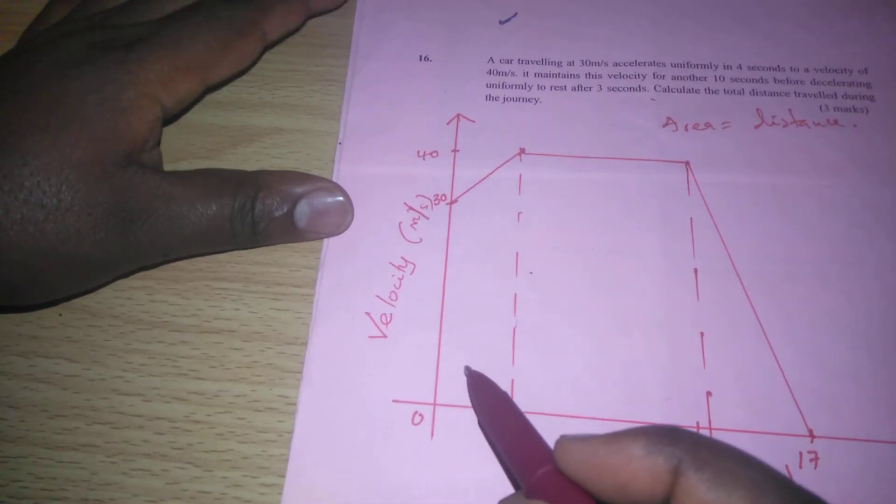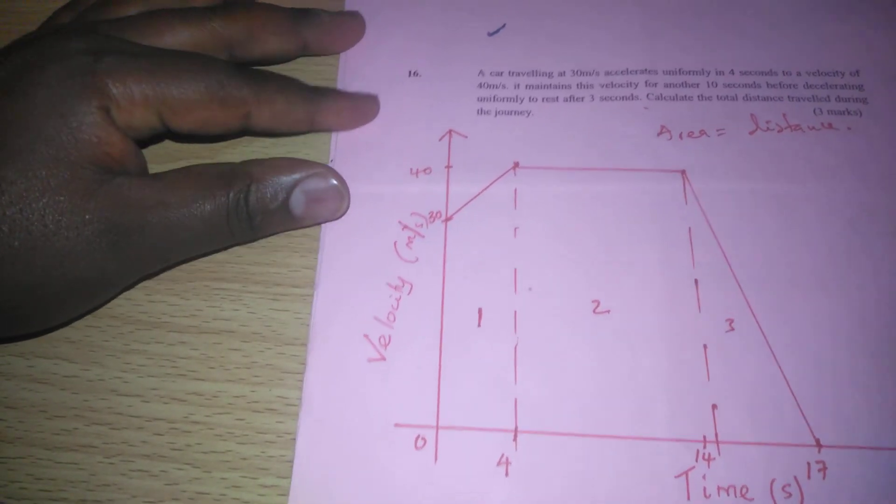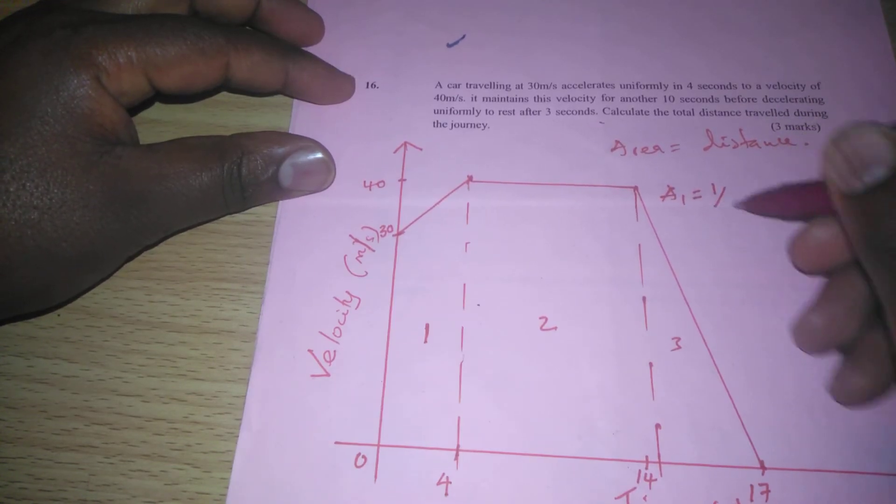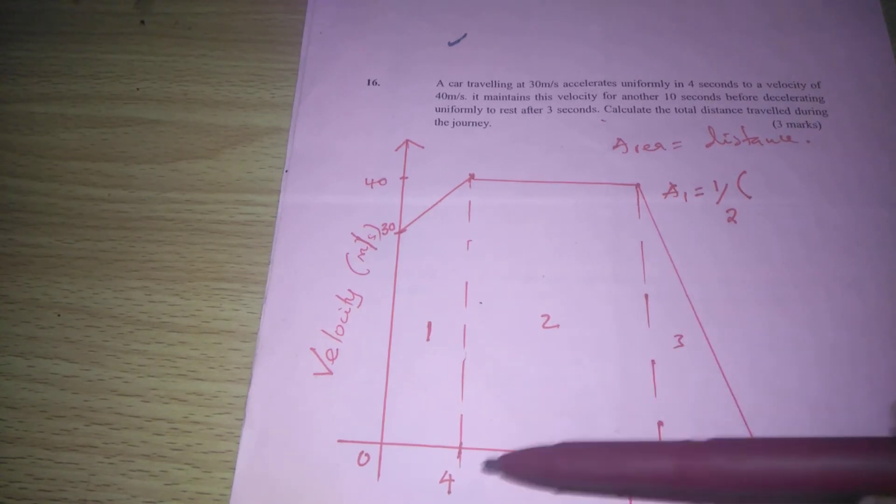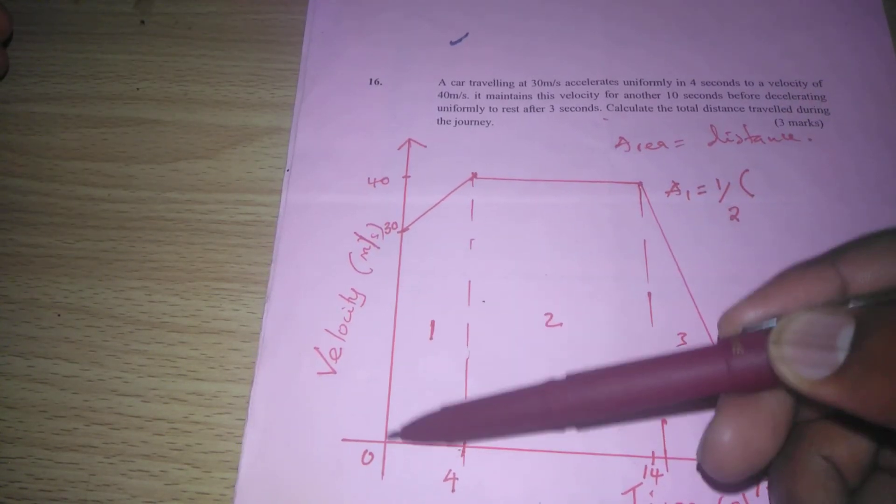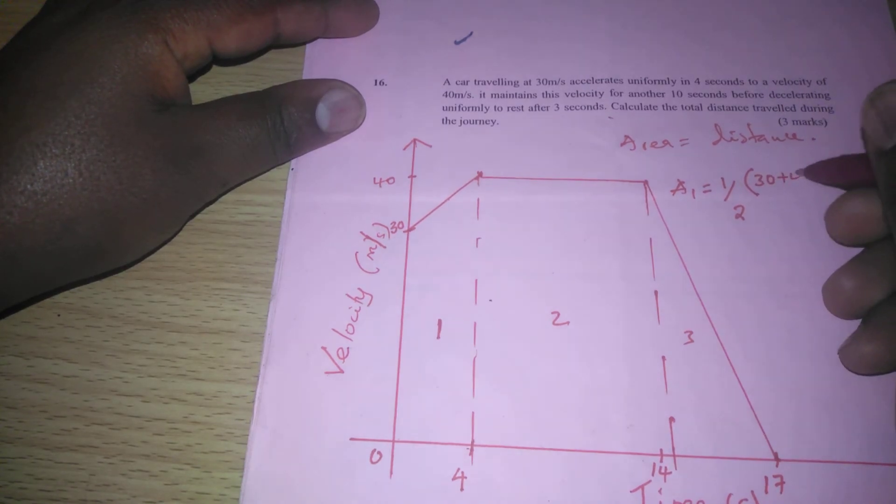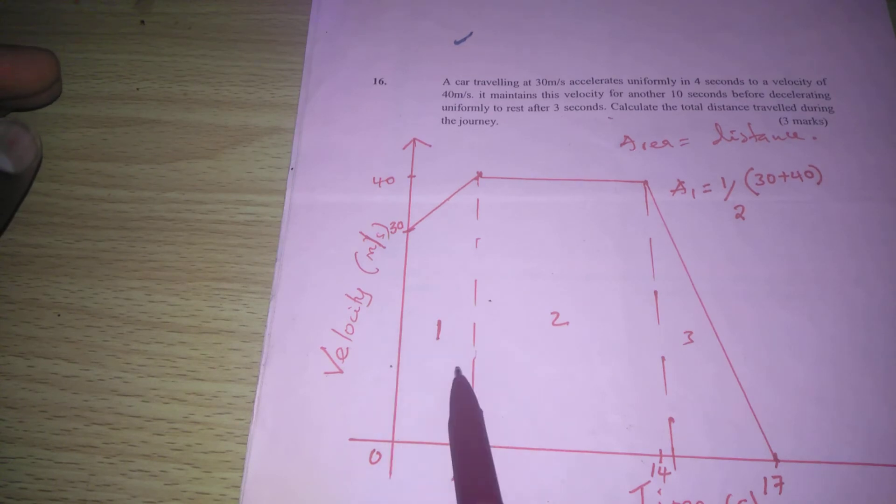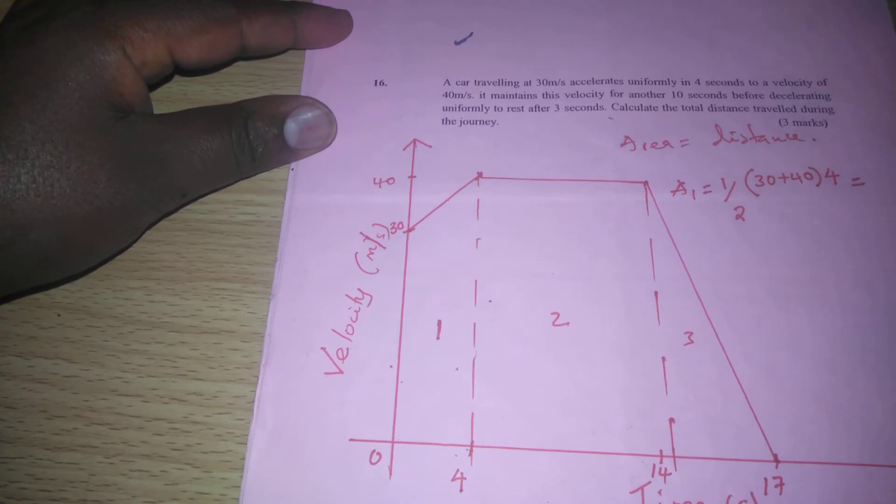For the first shape, which is a trapezium, the area is going to be half multiplied by the sum of the two parallel sides, 30 and 40 added. Then the distance between the two parallel sides, which is from 0 to 4. Therefore, we use 4 in that case.